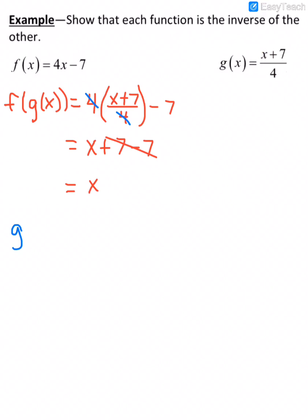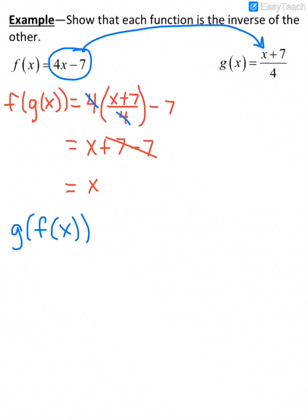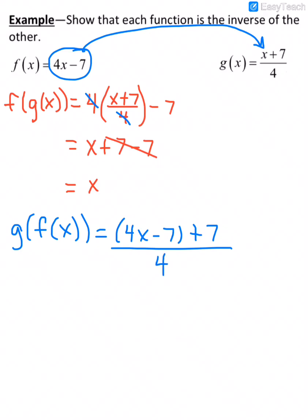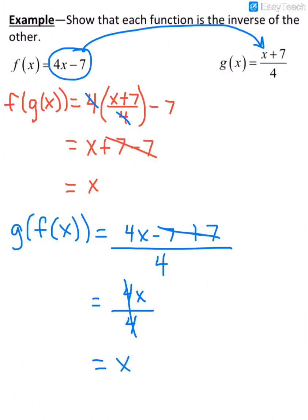Now we go the other direction and do g of f of x. We take f(x) and plug it into g where x is. So instead of x we plug in 4x minus 7, giving (4x minus 7 plus 7) over 4. There's nothing to distribute, so we remove the parentheses. Negative 7 and positive 7 cancel, leaving 4x over 4, which divides to x. Since both compositions equal x, the two functions are inverses of each other.